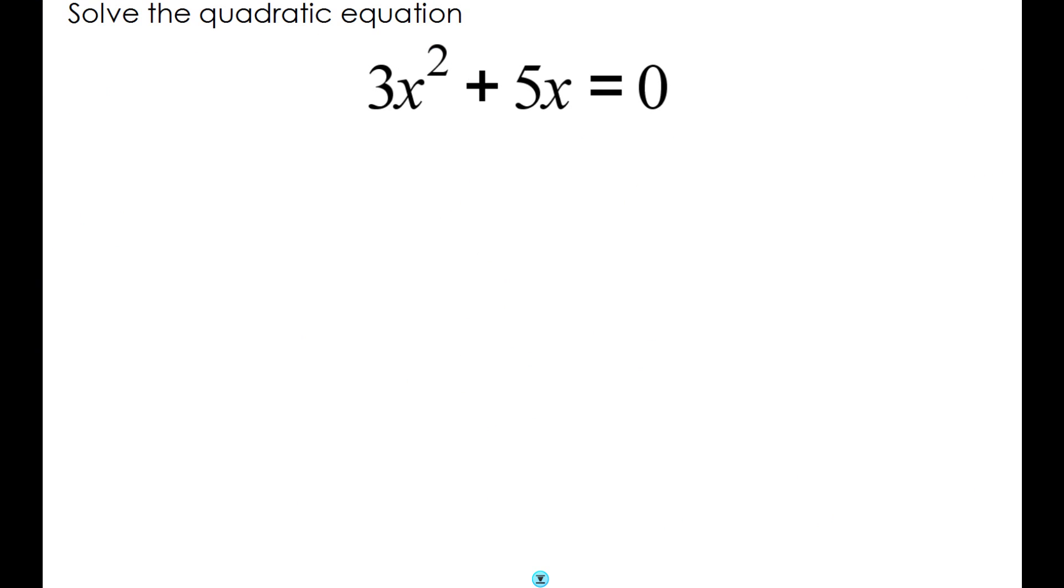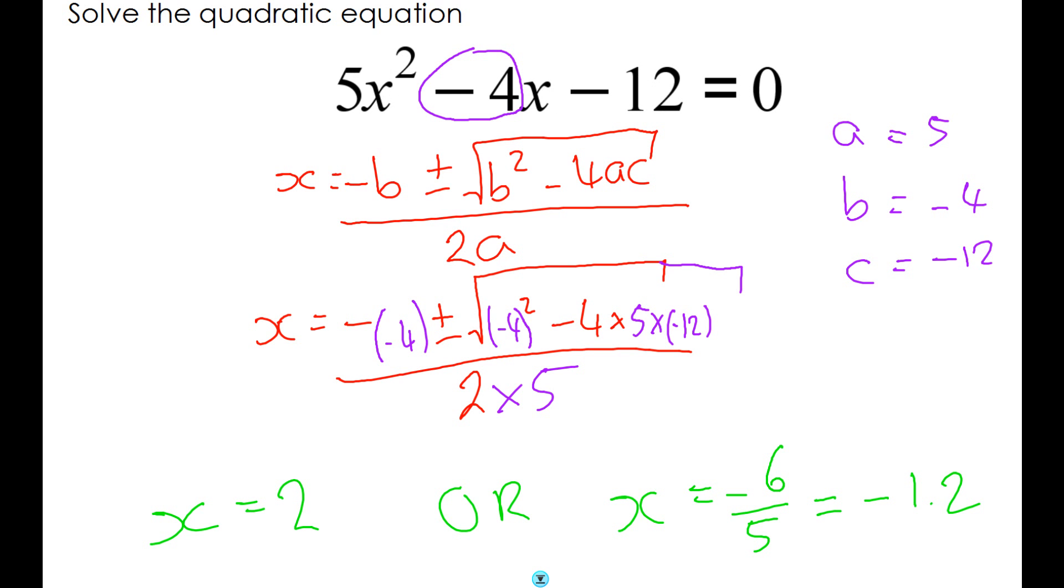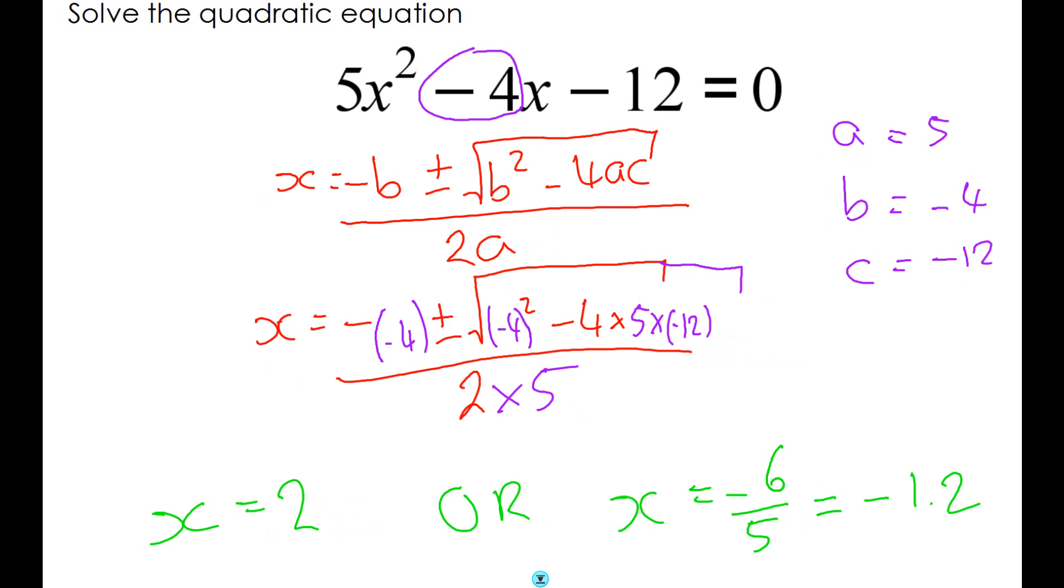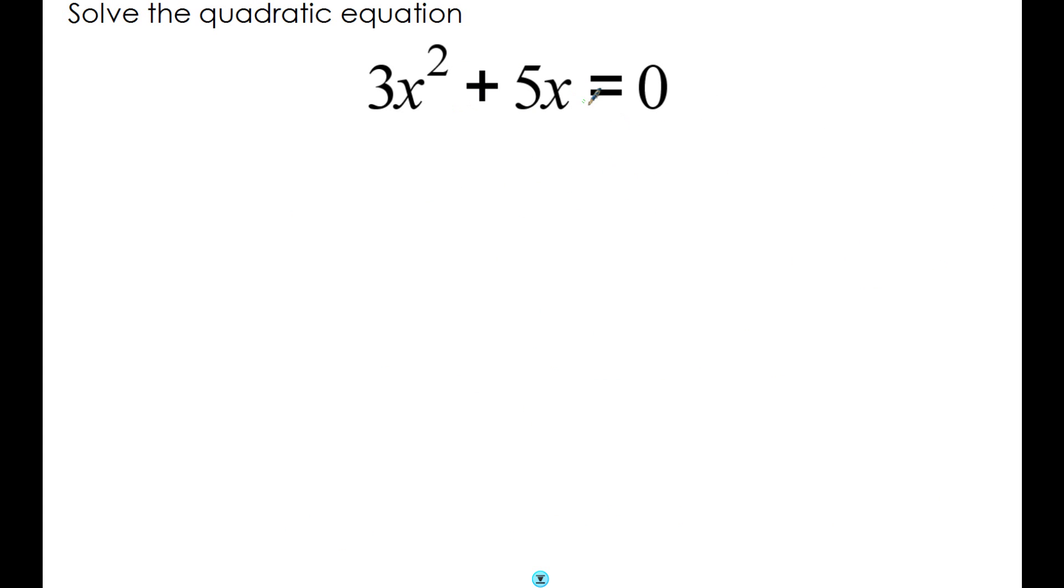This example here can look a lot harder than what we've looked at before. It looks strange, it doesn't look like the normal quadratic equations that we've seen. In this last example we had 5x² - 4x - 12. In this example we had 2x² + 9x + 3. We always had a number at the end. That's missing from this equation. It's actually not that difficult, and I'm not going to go through the whole example because we don't need to.